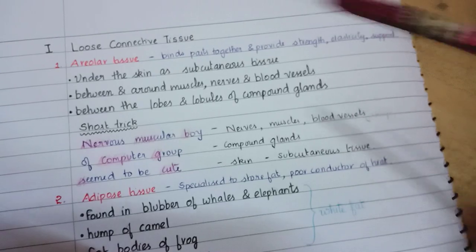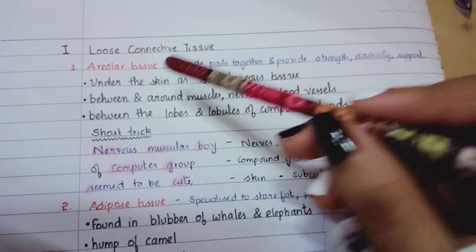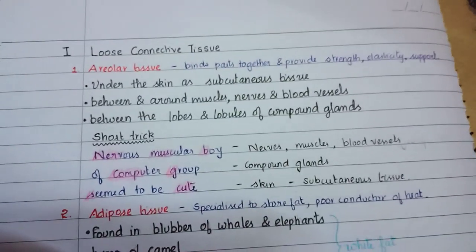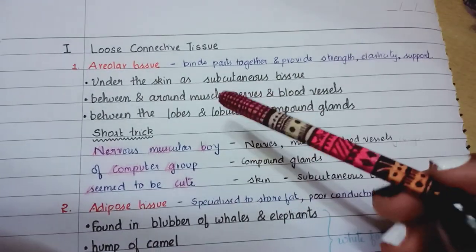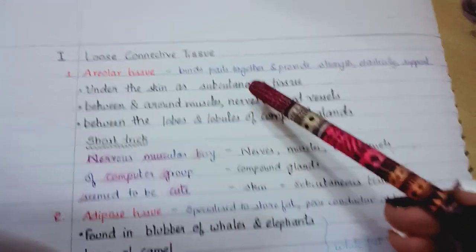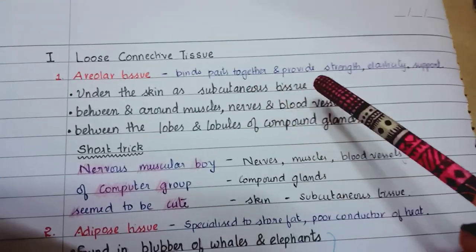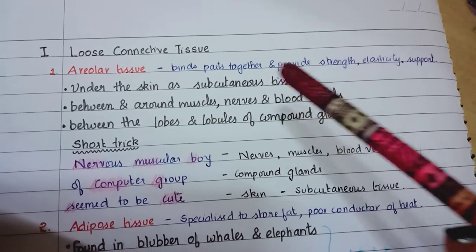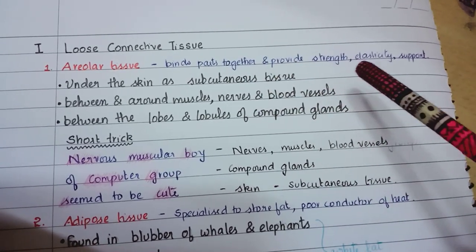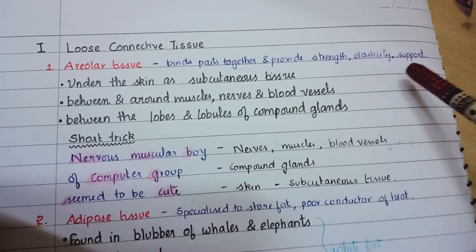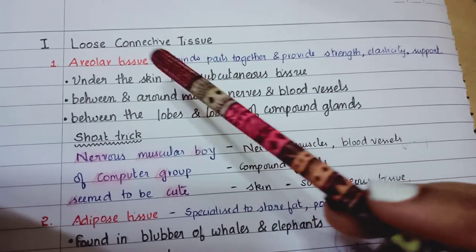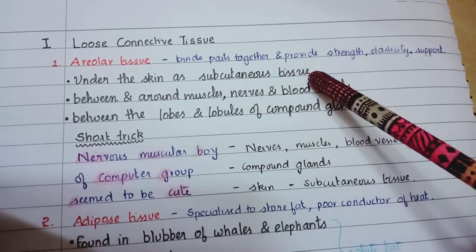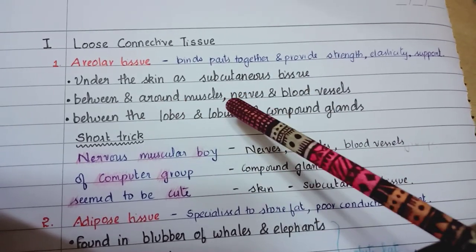Loose connective tissue - first we will learn the short tricks of loose connective tissue. We have areolar tissue which binds parts together and provides strength, elasticity, and support. It is found under the skin as subcutaneous tissue, between and around muscles, nerves, and blood vessels.